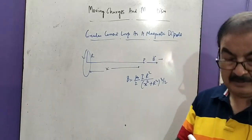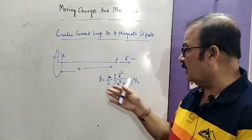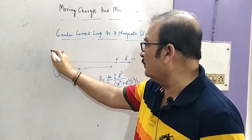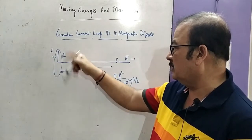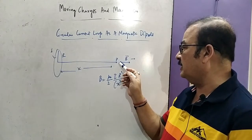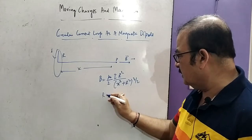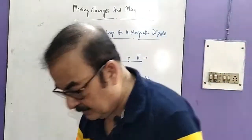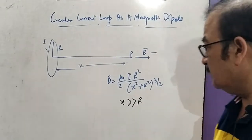We have already seen in a previous lecture how to derive this when we discussed the applications of the Biot-Savart law. We know this is the formula of a circular current loop of radius r carrying current i — the expression for magnetic field at any point P on its axis at distance x. Now, if x is much bigger than r, the above expression can be simplified.